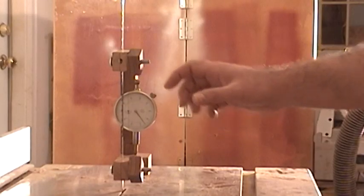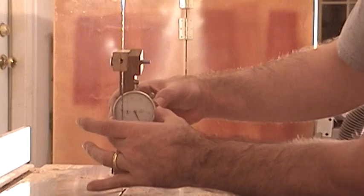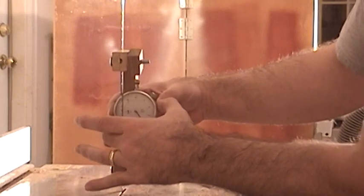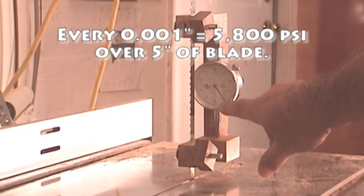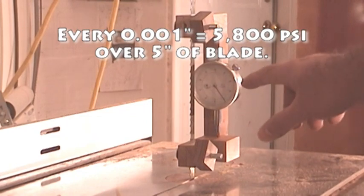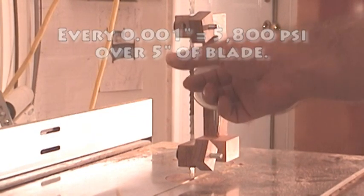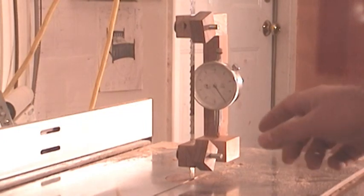Now with no tension on the blade, all I need to do is adjust the face of the dial indicator to zero. Each one thousandth of an inch that the blade stretches is equal to 5,800 psi of tension on the blade. Now for resawing, it's recommended that we have around 15,000 psi.